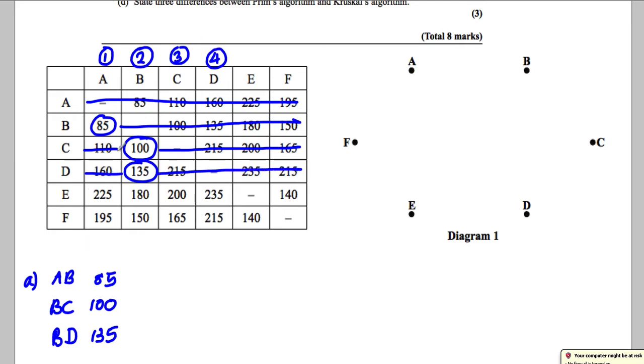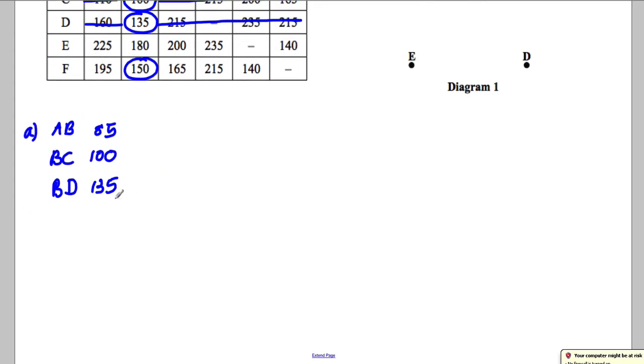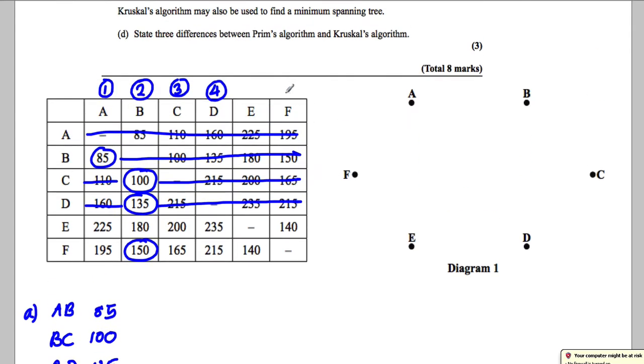And we call number D our fourth column and we cross out everything in row D. Now we look down these four columns to find the smallest. The smallest out of these looks to me to be the 150. So BF is our next one. So we write BF is 150. That's our next chosen one.